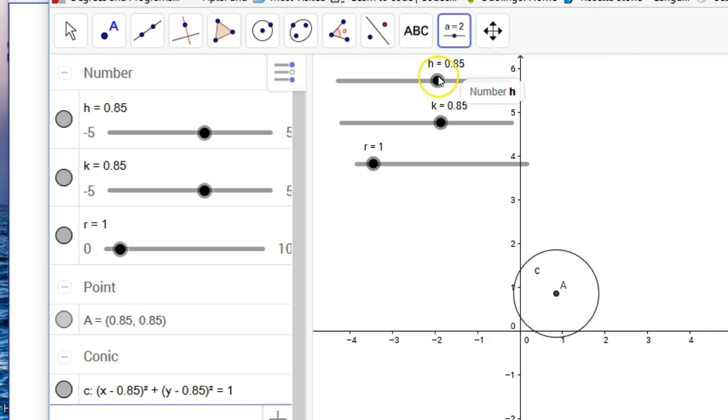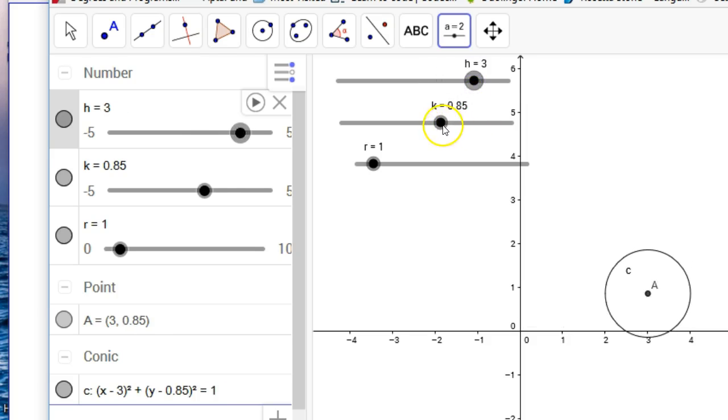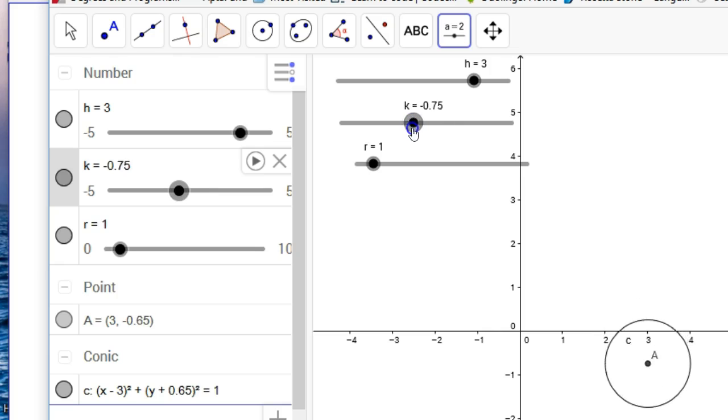So this is, since I've got it set on 0.85, this is a center of a circle of 0.85, 0.85, and a radius of 1. So we can move that circle to the right, maybe put it on 3, maybe go down, put it on negative 1.